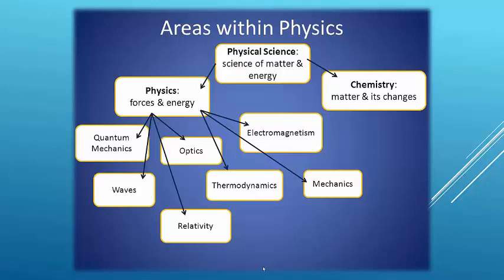Let us discuss each branch. First, optics — optics is the branch of physics which deals with the study of light energy. You studied in your 9th standard about reflection of light, refraction of light, and dispersion of light — how white light is split into seven colors, how light bends when traveling from one medium to another, and what is the speed of light.